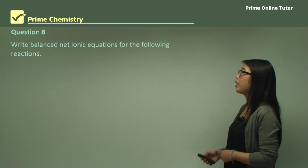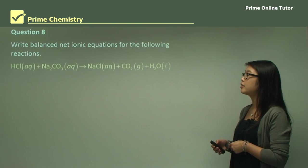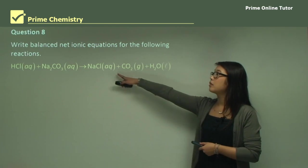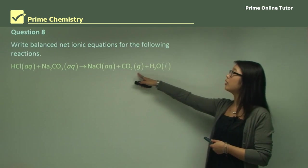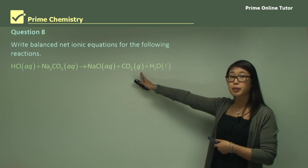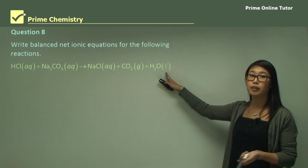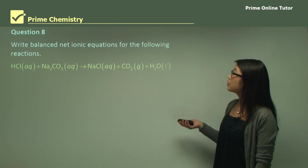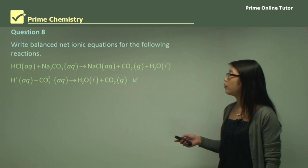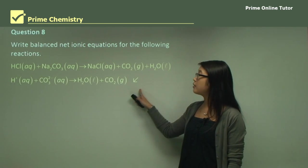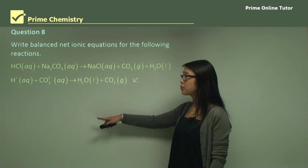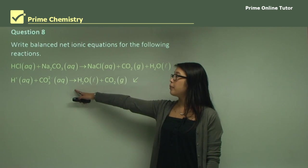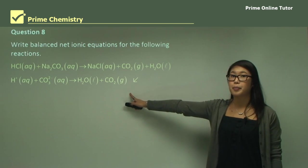Question eight: write balanced net ionic equations for the following reactions. Hydrogen chloride with sodium carbonate forms salt, carbon dioxide gas (put the G in for gas), and liquid water (always put liquid for water). Because it asks for the net ionic equation, we remove the spectator ions — NaCl is excluded. We're left with H+ plus carbonate forming water and carbon dioxide.